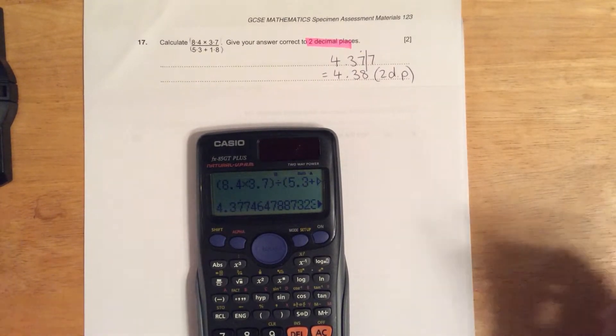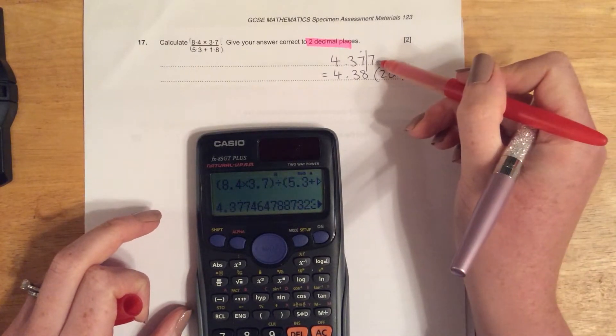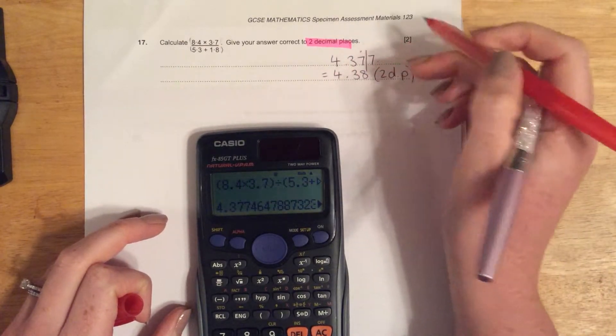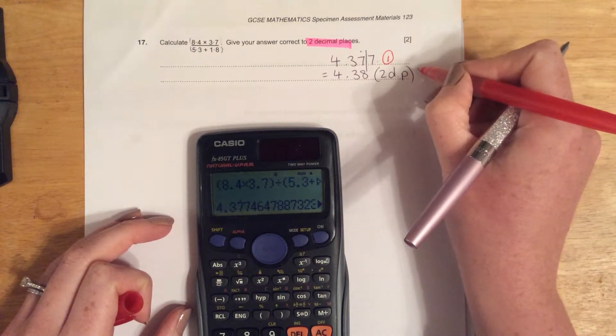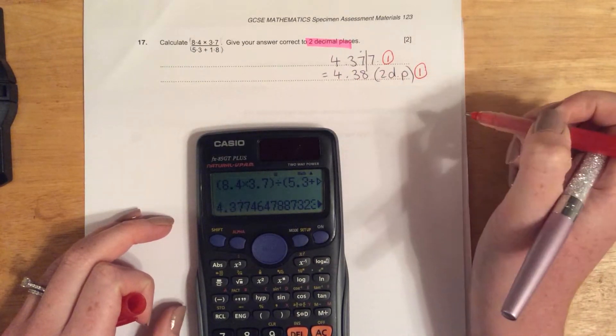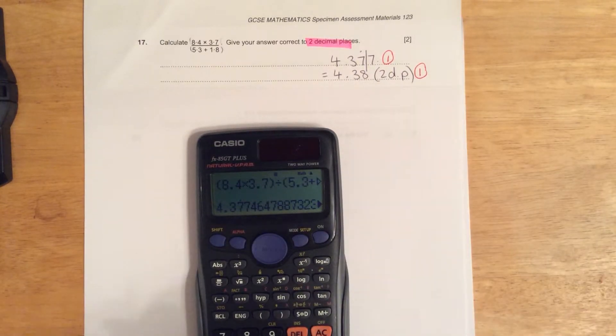If you had a two-mark question, if you had this or 4.37, that would give you one mark. But the full two marks would be awarded for 4.38 because you rounded correctly.